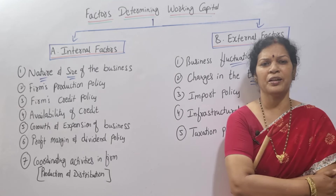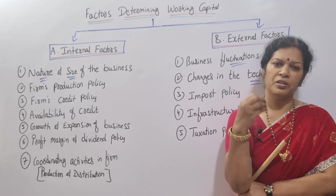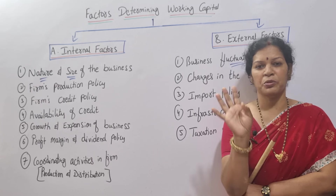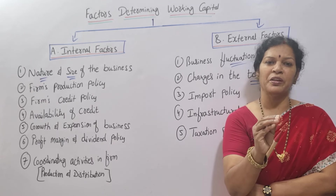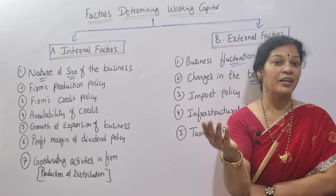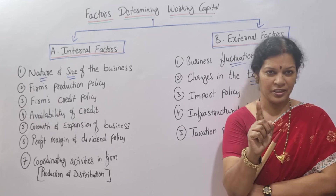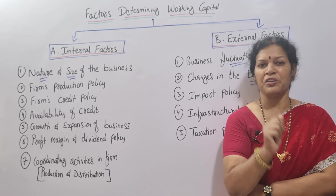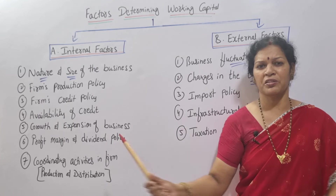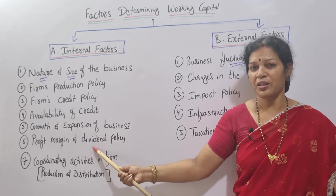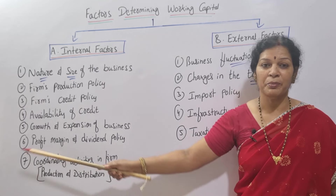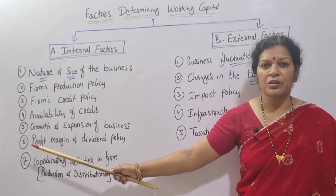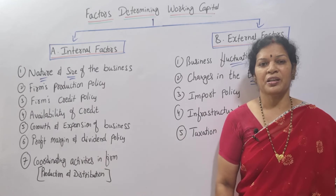For example, if you have 50 Lakh profit and all of it is distributed as dividends to shareholders, then you have no retained earnings left for working capital. But if out of 50 Lakhs you distribute 30 Lakhs as dividend and retain 20 Lakhs, that retained portion stays as working capital surplus. So profit margin and dividend policy directly affect working capital availability.